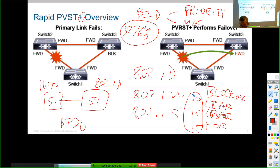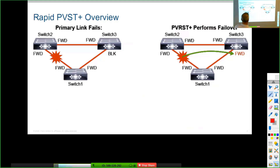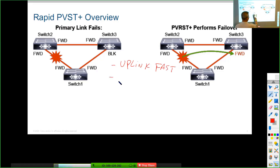That 50-second timer is why Rapid was needed. Before the standard, Cisco said that's not good enough — it takes too long for any interface to go from Blocking to Forwarding. So Cisco came out with two proprietary features: Uplink Fast and Backbone Fast.